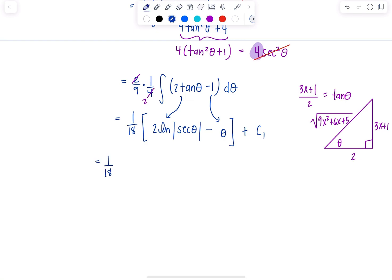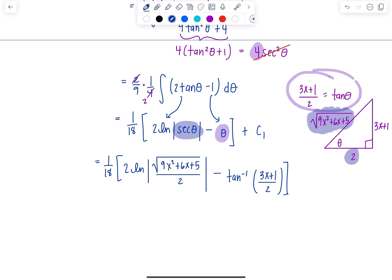So this is 1 18th times 2 ln absolute value. Secant theta is the ratio of the hypotenuse over the adjacent side, so that's radical 9x squared plus 6x plus 5 over 2 minus theta. Since tangent of theta was 3x plus 1 over 2, we replace theta with tan inverse of 3x plus 1 over 2. This is the result from the first integral. Save this on the back burner.